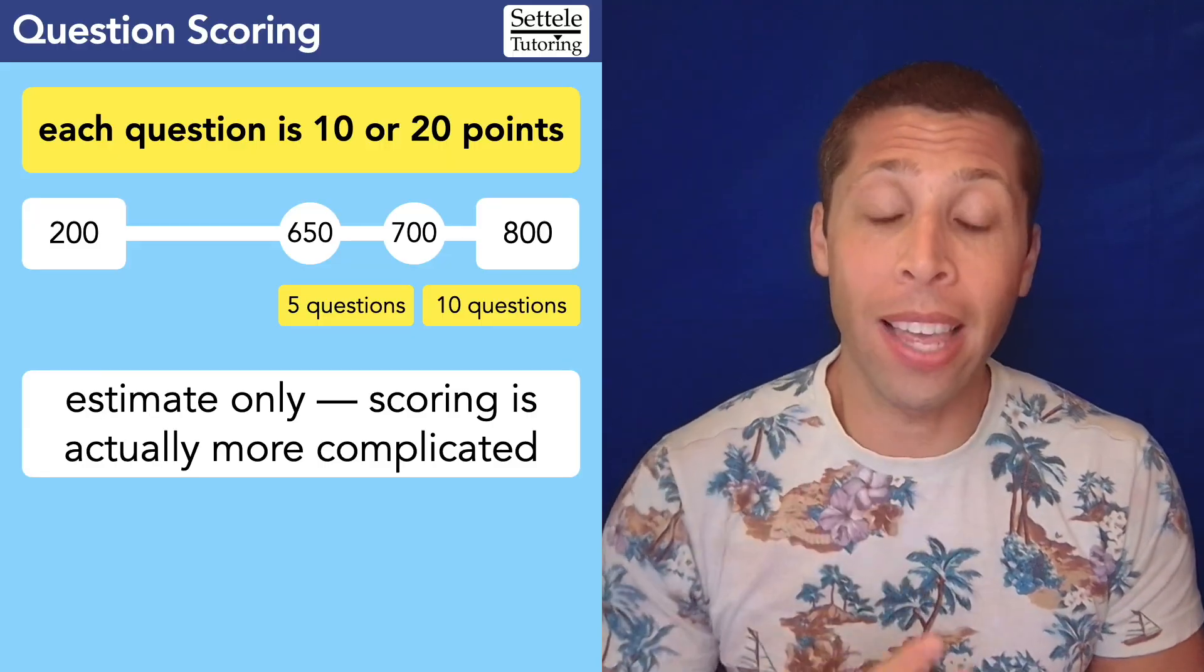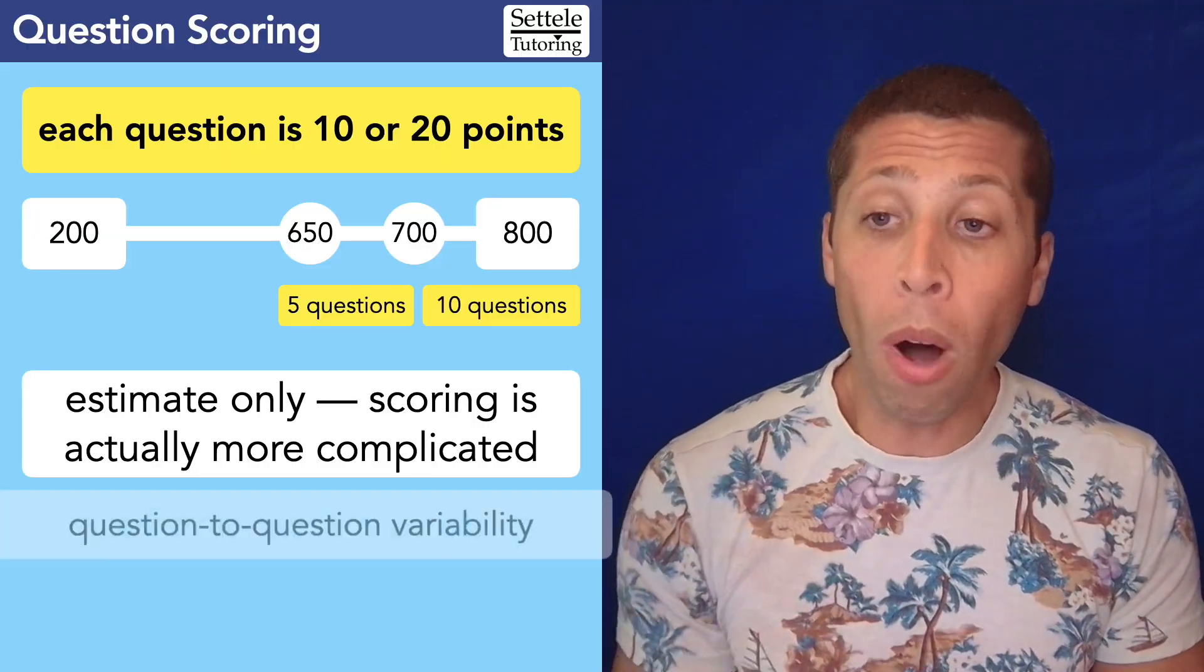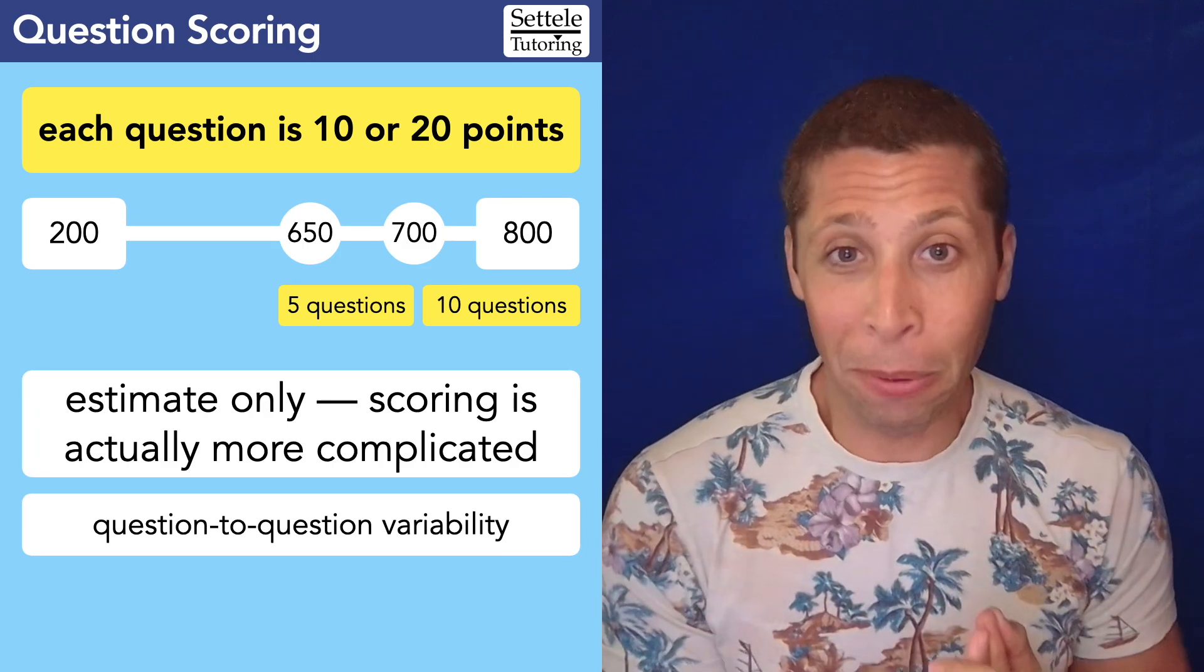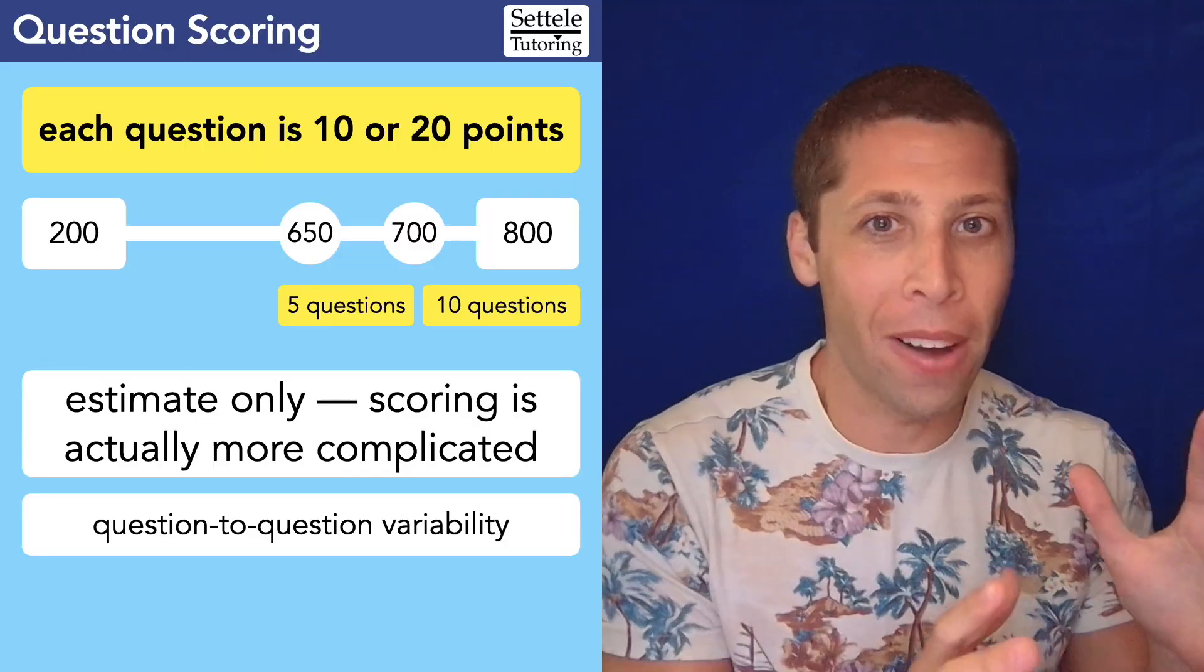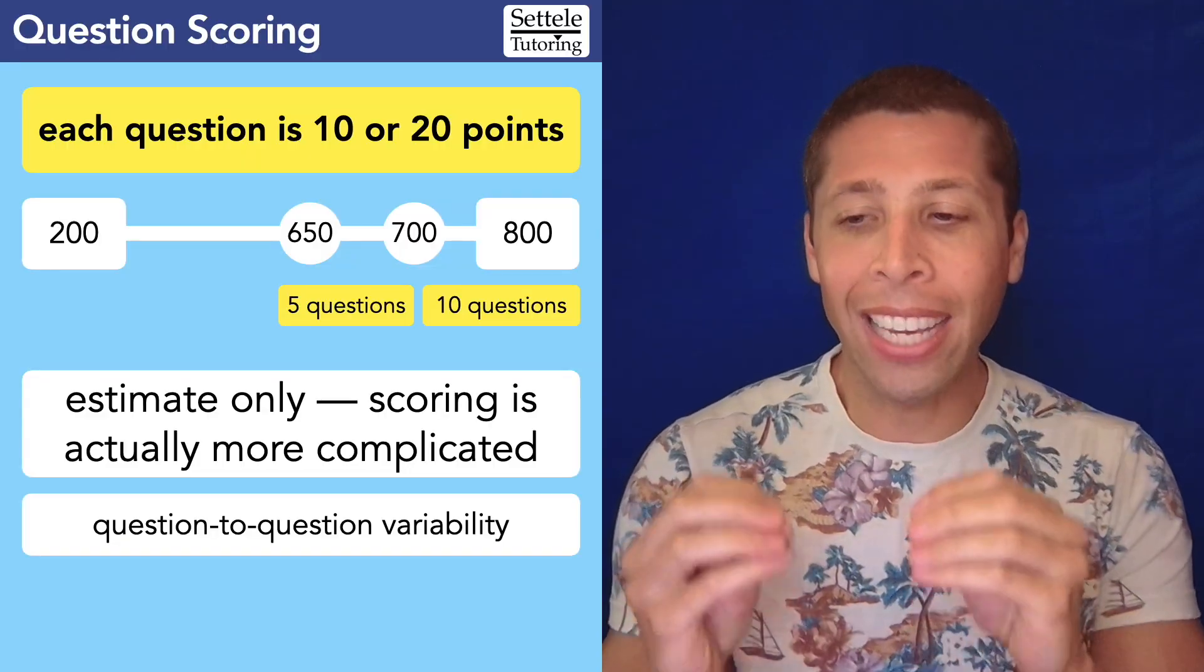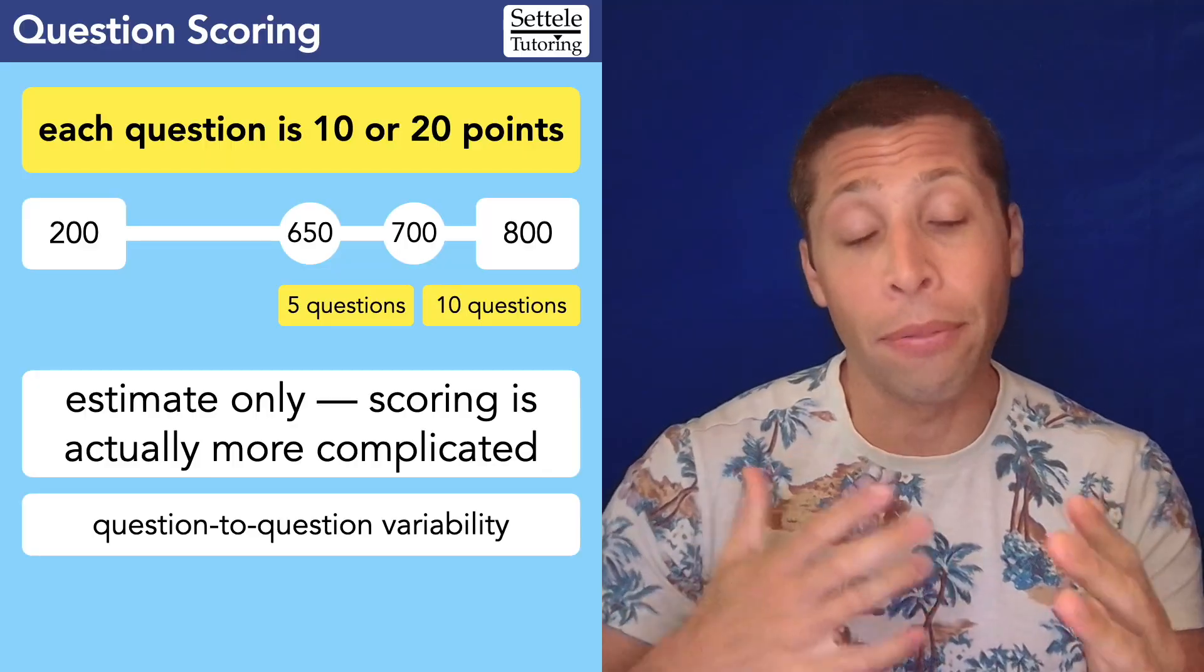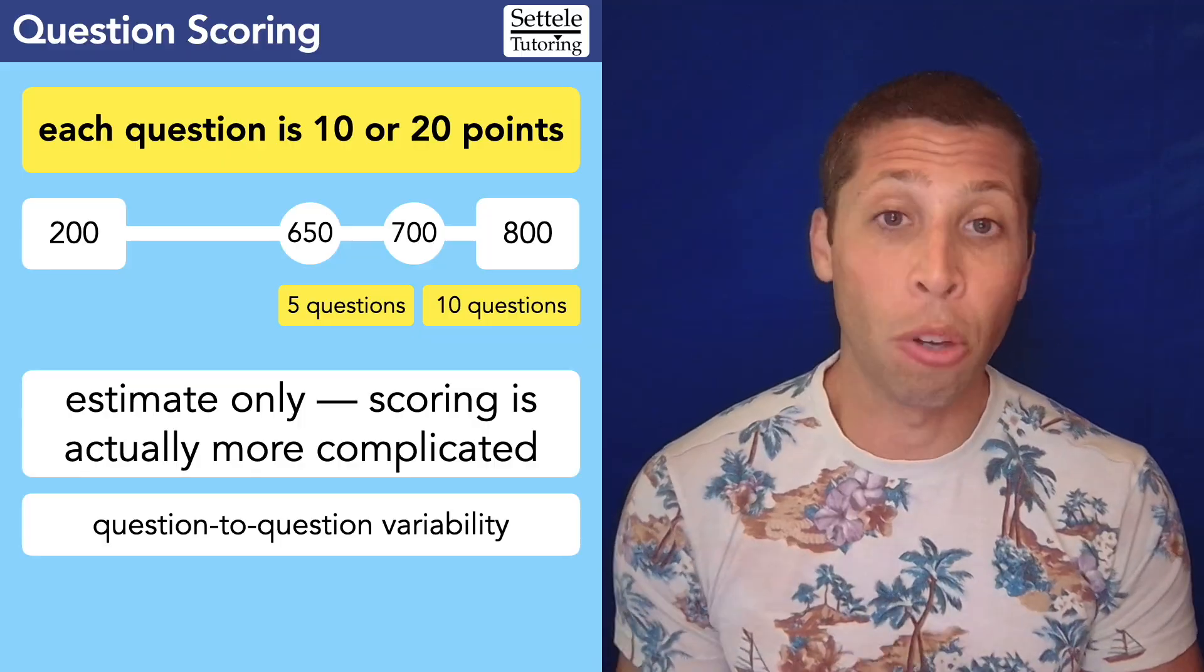To give you a sense of why this is just an estimate, there are two basic things that make it harder to understand definitively what's going on with our scores. One is that there is variability from question to question. Now, you might have said, 'Yeah, duh, Mike. You said some are worth 10, some are worth 20.' Well, that's an oversimplification. There isn't a list of the 10-point questions versus the 20-point questions. It's not like any particular question is worth a set number of points on this scale. There's a lot of stuff going on in the back end—different difficulty levels and different points going on in a way that we'll never know. The College Board has not released this information, so the best we can do is guess.